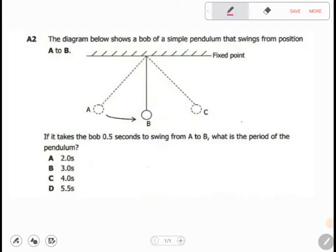The first one, we know that period is equal to time taken over number of complete oscillations. Now, time taken is 0.5 seconds. And the number of complete oscillations, remember it's moving from A to B. When it moves from A to B, it makes what we call quarter oscillations.